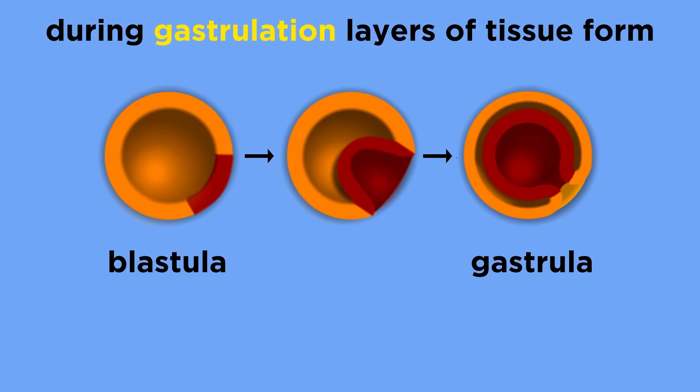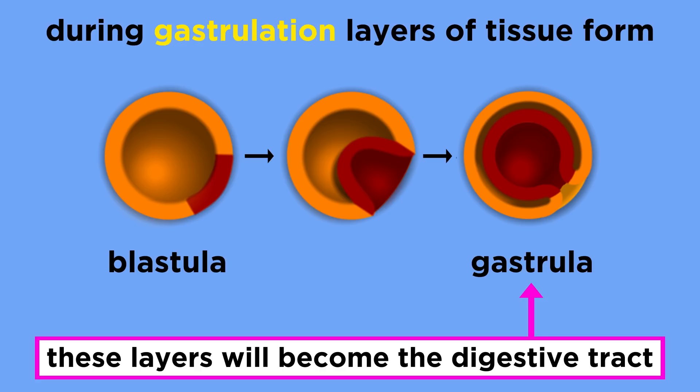This is where things start to get specialized. Gastrulation is the process by which these cells will fold into layers of embryonic tissue — tissue that will eventually line the animal's digestive tract — and all the other tissues and organs will later form in a similar manner.